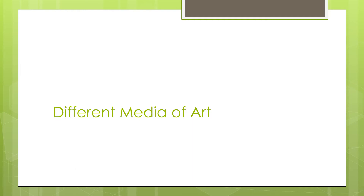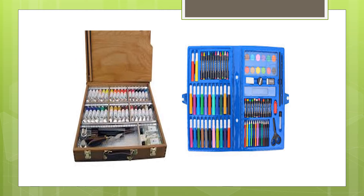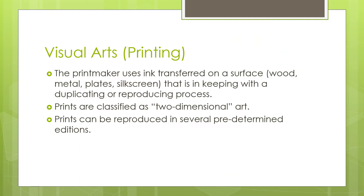Visual arts — painting. The painter uses pigments like watercolor, oil, tempera, textile paint, acrylic, ink, charcoal, pencils, etc., on a flat ground like wood, canvas, paper, stone, or wall. Paintings are classified as two-dimensional art because they are flat — they only have length and width. Paintings are unique and one-of-a-kind. These are examples of pigments as media and the surfaces used as media.